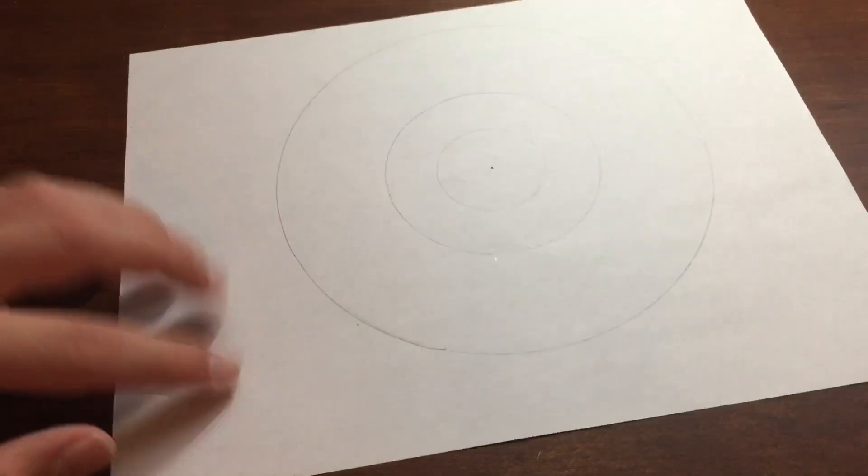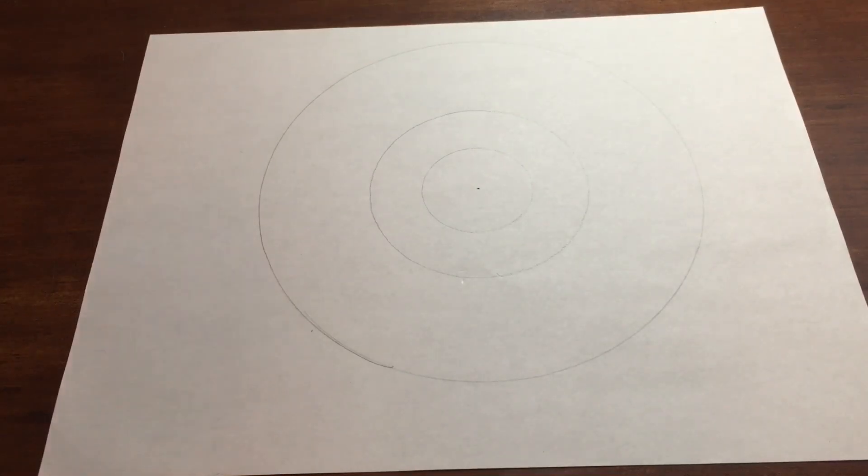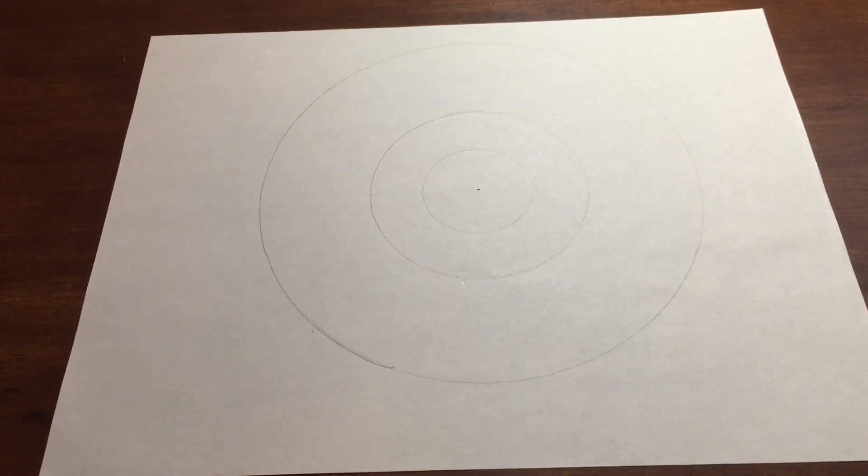You might want to go over it a couple times just so you can see it better. That leads to a piece and gentlemen, is how you draw a perfect circle. Thank you for watching this geometry tutorial and I hope you found it helpful.